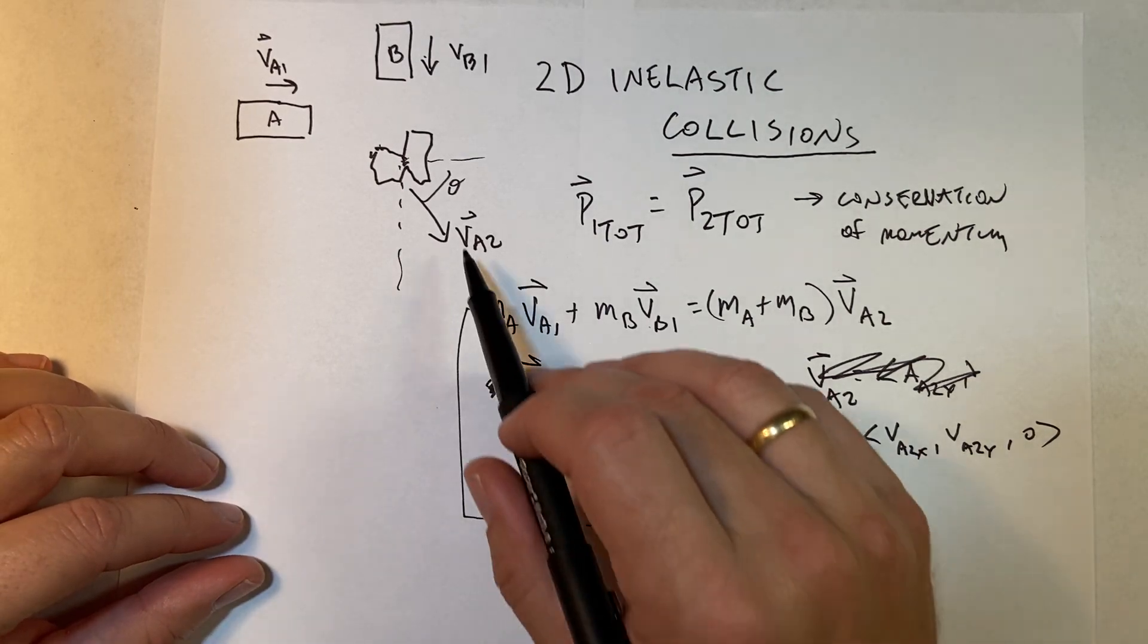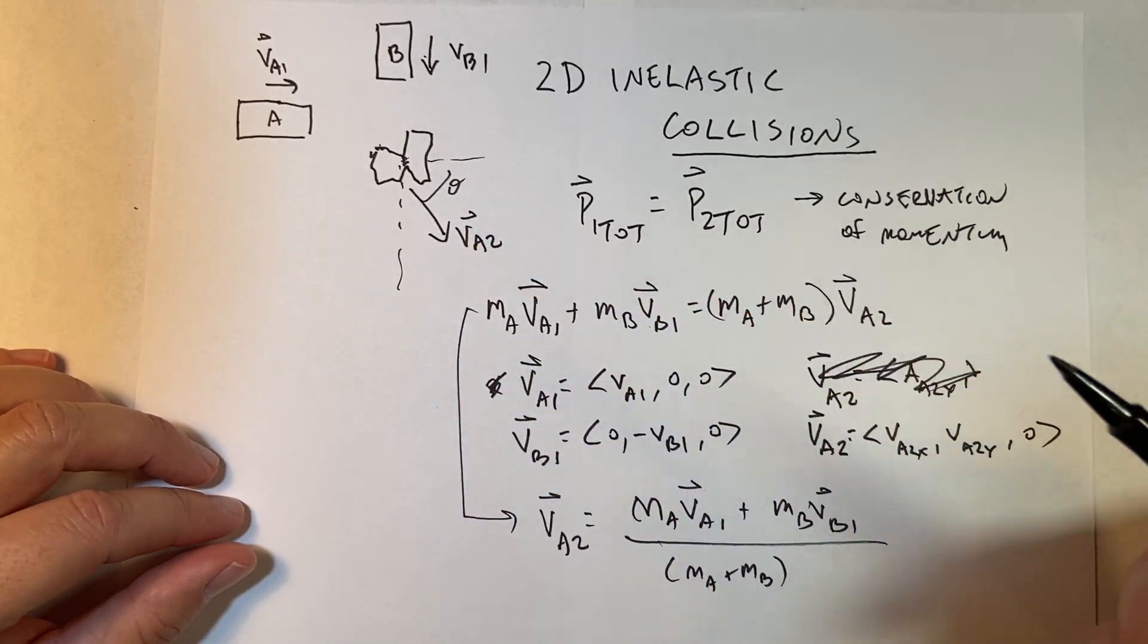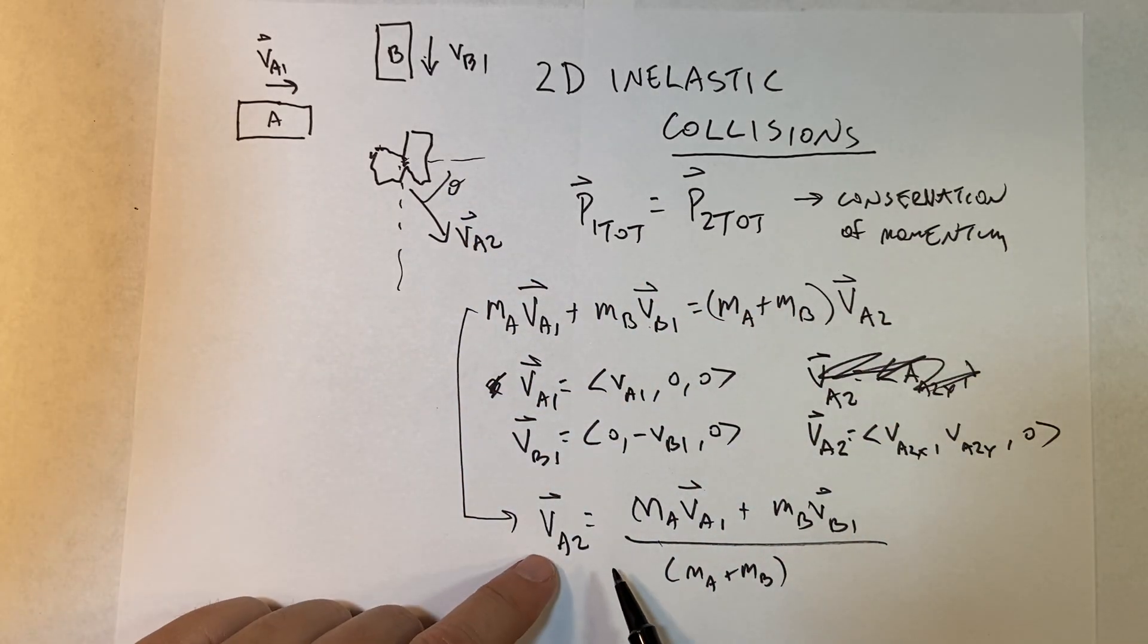Now you might want to say, 'Okay, then how do I find this angle and how do I find the magnitude?' Well, I could find the magnitude right there, and then I could find the angle too from that vector. So let's say if I have my final velocity vector right here...